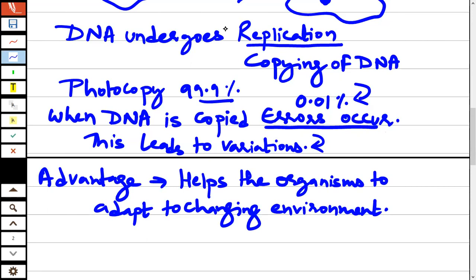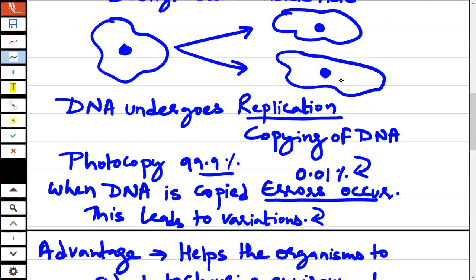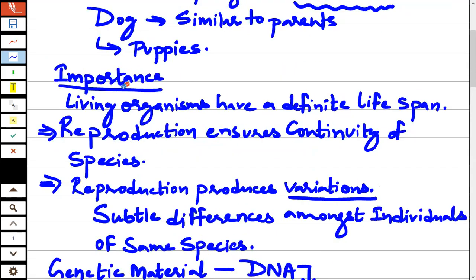Variation is produced when a cell reproduces — when a living organism reproduces, it first copies its genetic material to give the complete genetic material to offspring. This process leads to formation of new variations. So these are the two important points: reproduction ensures continuity of species, and reproduction produces variations that help organisms adapt. If asked 'what is the importance of reproduction' in the board exam — these are the two points you need to explain.